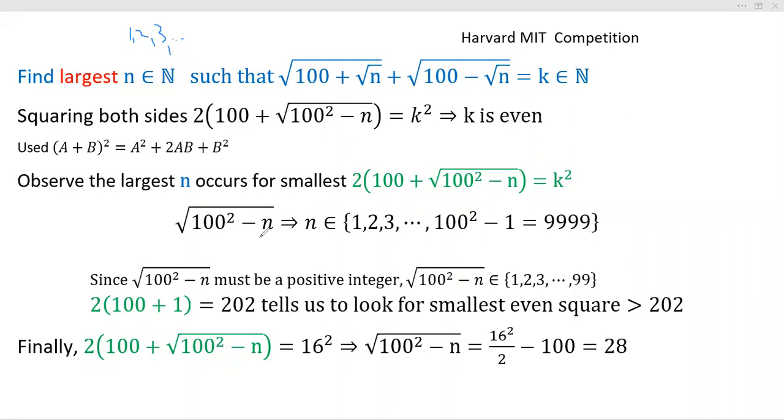A couple of observations that took me a long time: this piece right here has to be an integer because everything around it is an integer. So √(100² - n) has to be an integer.